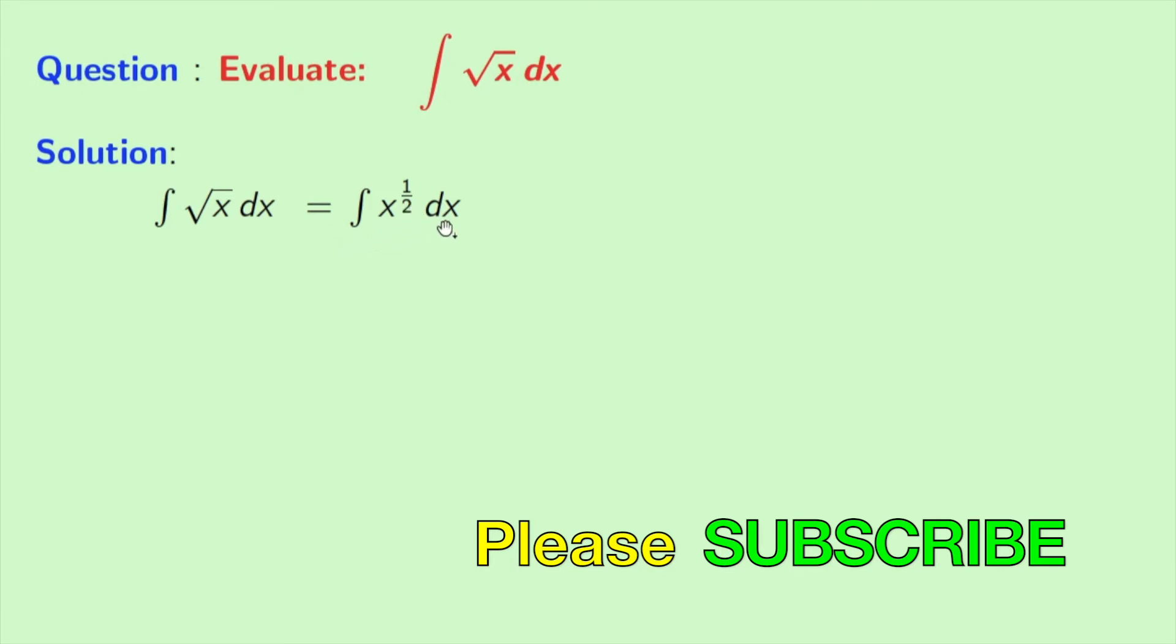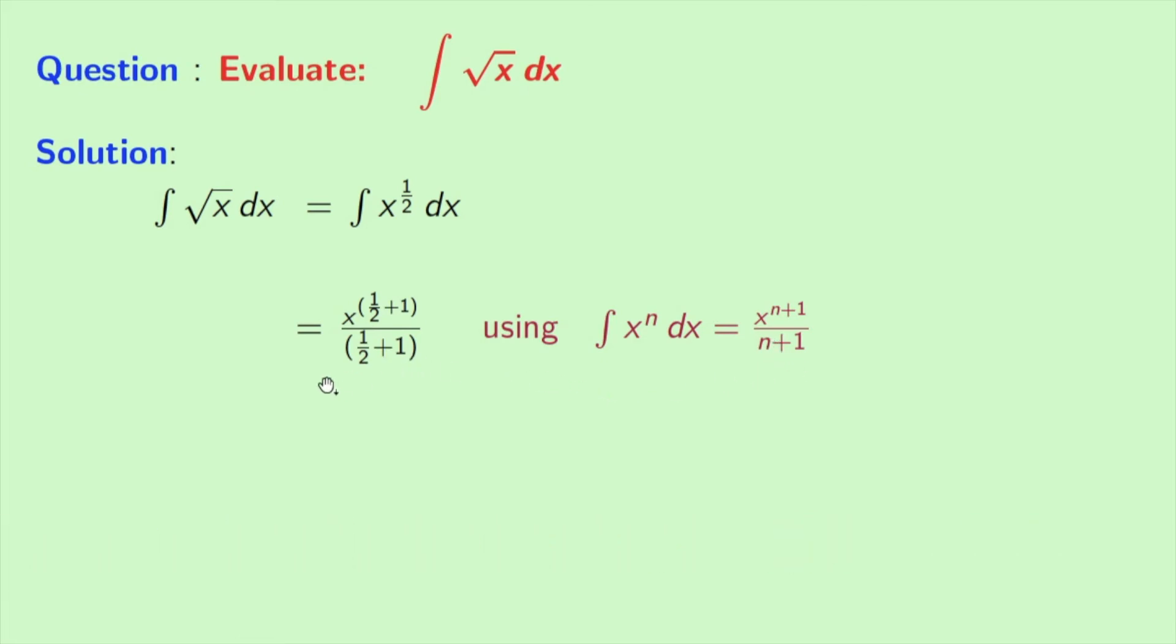Now after integrating we get x to the power half plus 1 in the numerator and in the denominator we have half plus 1. Here we have used this rule of integration: integration x power n dx is equal to x to the power n plus 1 by n plus 1.